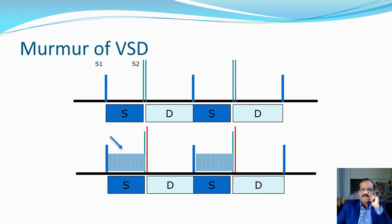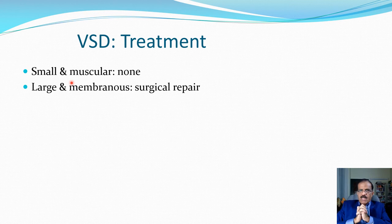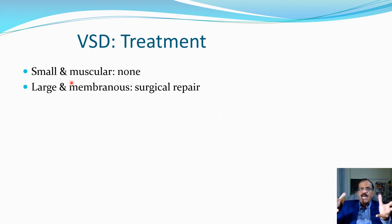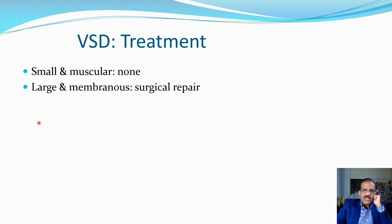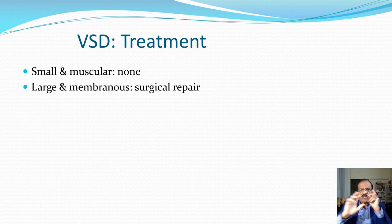Treatment of VSD: if it is small and in the muscular part, no treatment may be required, as we hope the muscle will grow and occlude the defect. If it is large or in the membranous part, surgical repair is needed. Unfortunately, there is no catheter-based treatment for VSD — these patients require open heart surgery.